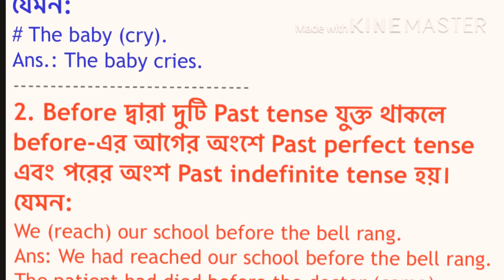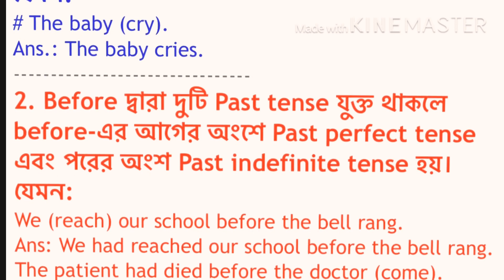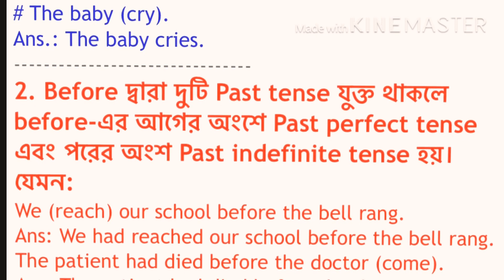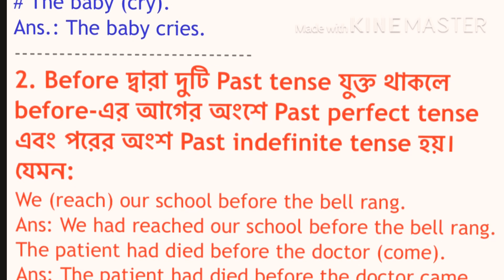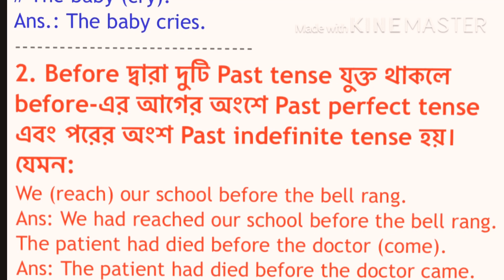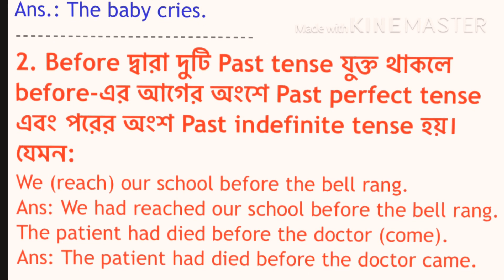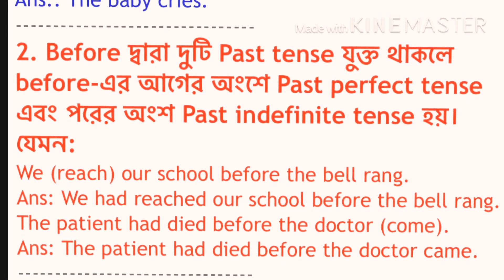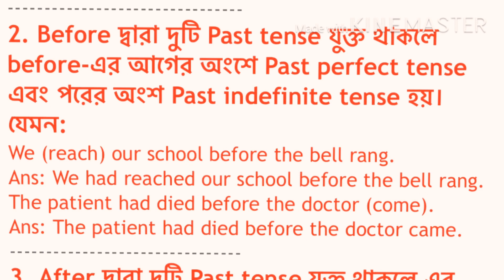What to do if the sentence is in past tense and two clauses are connected with 'before'? The first part of the sentence will be in past perfect tense and the last part after 'before' will be in simple past tense. For example, we can see on the screen: 'We reached our school before the bell rang' becomes 'We had reached our school before the bell rang.' We can see the first part is in past perfect tense.